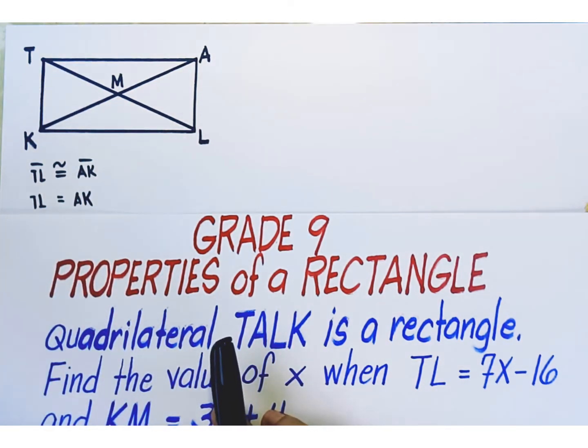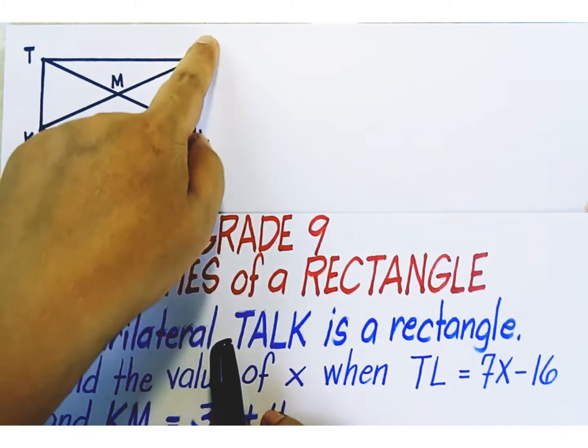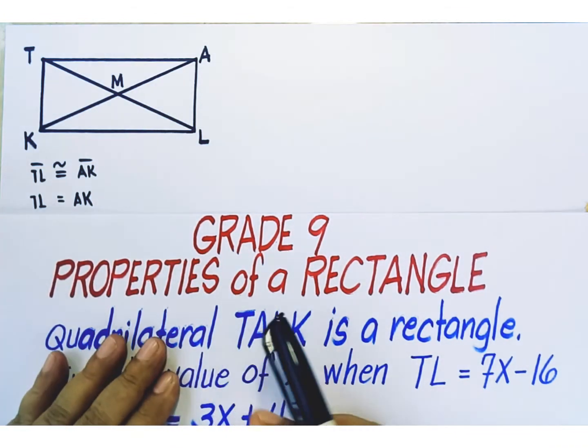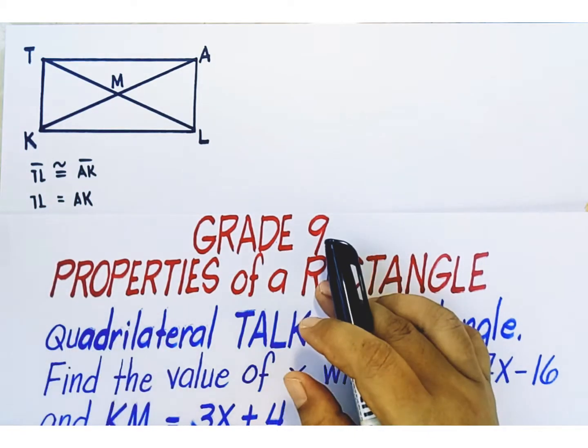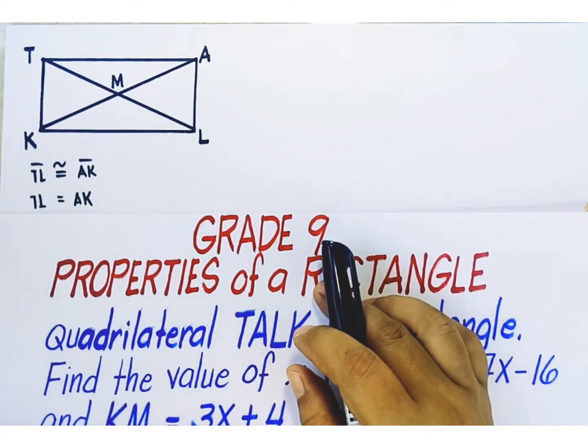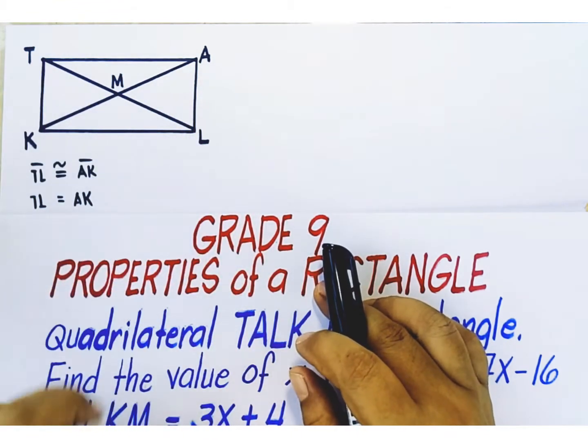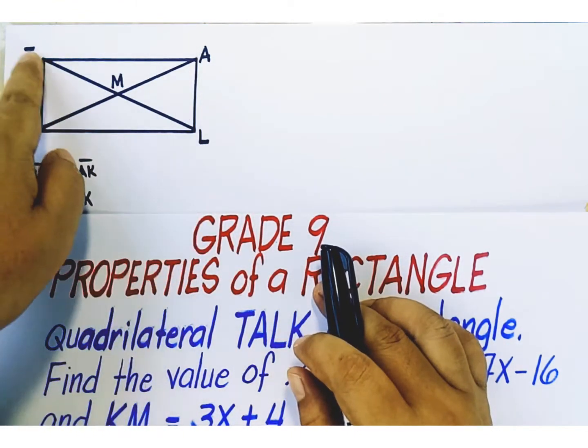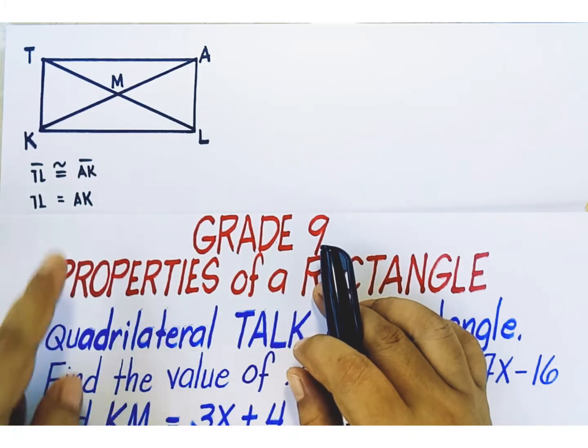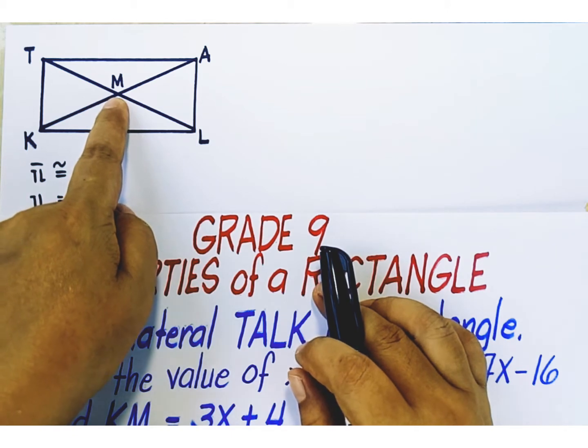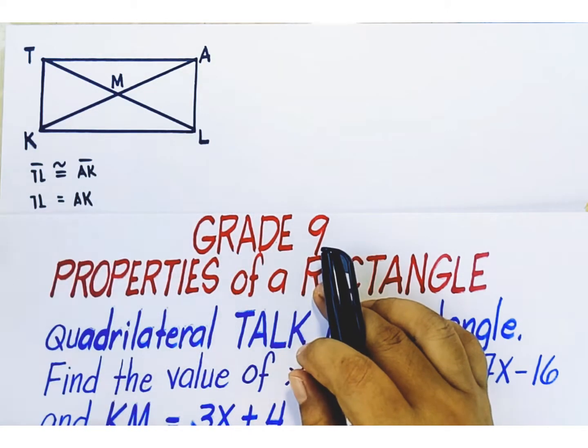Another property of a rectangle states that the diagonals of a rectangle bisect each other. And when we say that diagonals bisect each other, we mean that they divide each other equally. Therefore, if this is our rectangle TALK and these are the diagonals, this point, point M, is actually the midpoint of the diagonals.